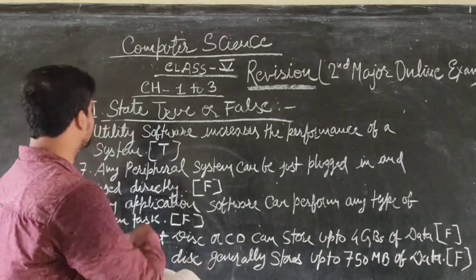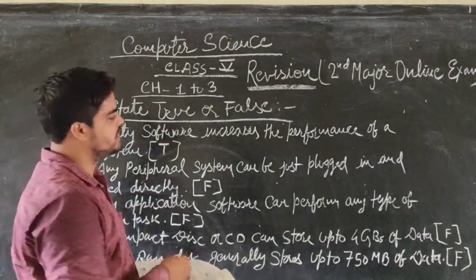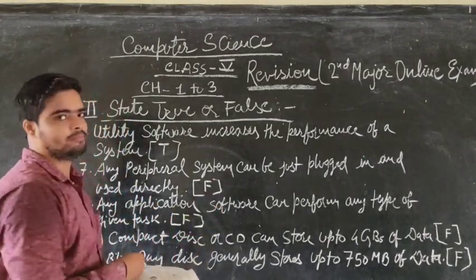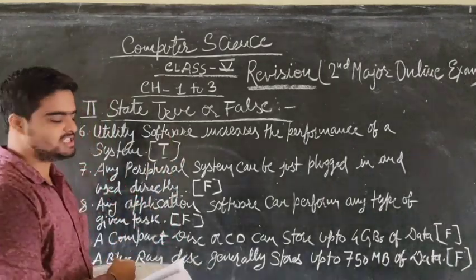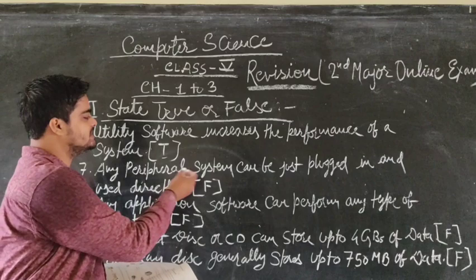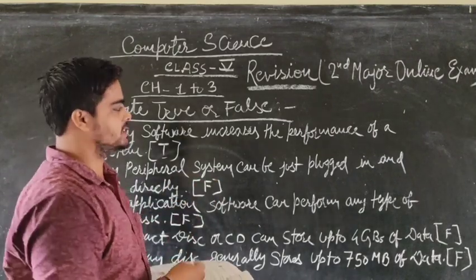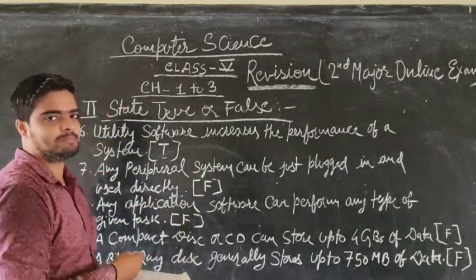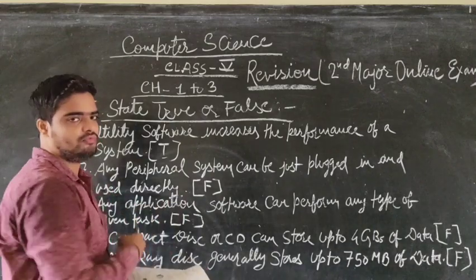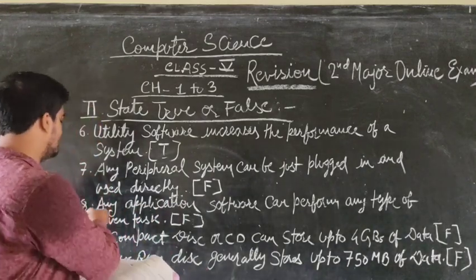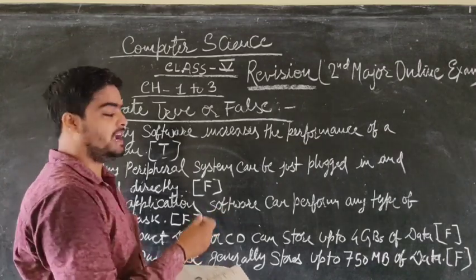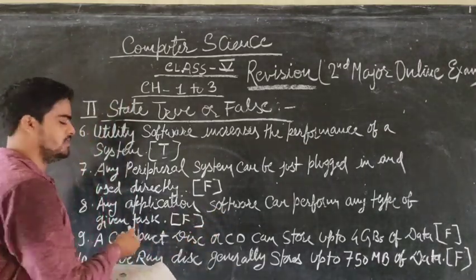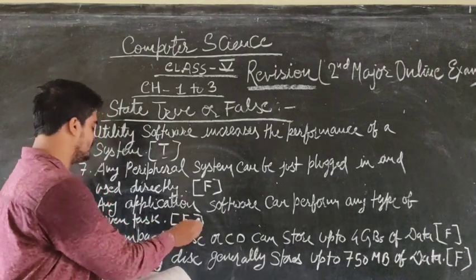Question 6: Utility software increases the performance of a system. This statement is true. Question 7: Any peripheral system can be just plugged in and used directly. This statement is false. Question 8: Any application software can perform any type of given task. This statement is also false.